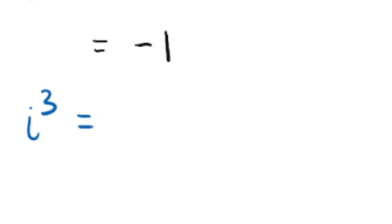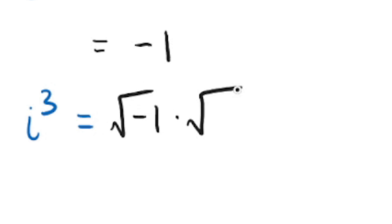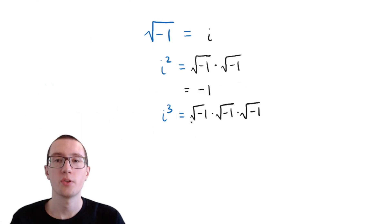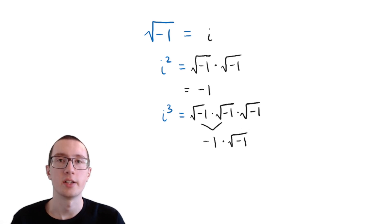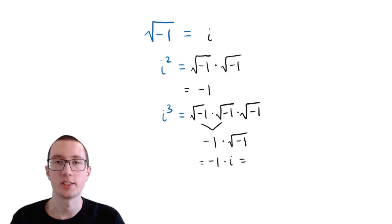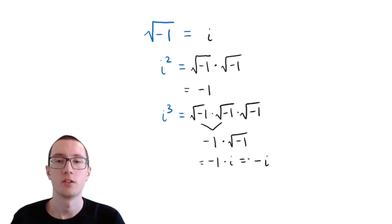Now what about i cubed? i cubed is the square root of negative 1 times the square root of negative 1 times the square root of negative 1. Two square roots of negative 1 make negative 1. So we have negative 1 times the square root of negative 1. And the square root of negative 1 is i, so we have negative 1 times i.